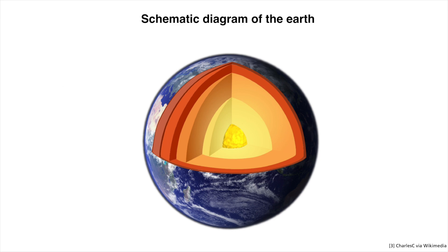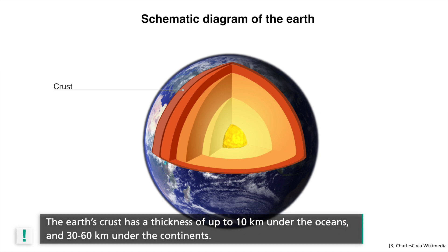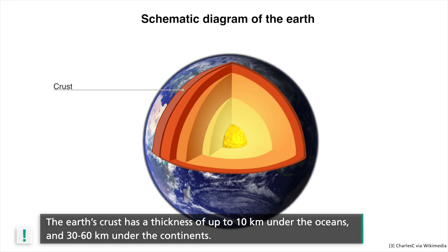In the schematic diagram of the earth's interior, it is shown in brown. Under the oceans, it goes down to a depth of approximately 10 kilometers and under the continents to a depth of up to 30 kilometers on average.